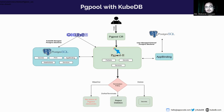PGPool has three types of termination policies. When the termination policy is Wipeout, you can delete all the resources by terminating PGPool. But if the termination policy is DoNotTerminate, the termination will be rejected. Also, if the termination policy is Halted, the secrets will be retained and the other resources will be terminated.